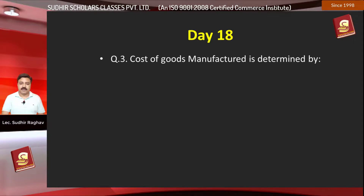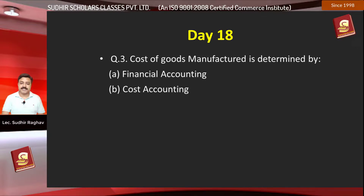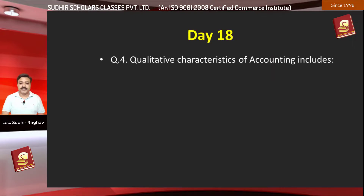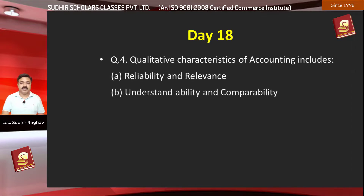Question number 3: Cost of goods manufactured is determined by — Option A, financial accounting; Option B, cost accounting; Option C, management accounting; Option D, human resources accounting. Question number 4: Qualitative characteristics of accounting includes — Option A, reliability and relevance; Option B, understandability and comparability; Option C, both A and B; Option D, none of the above.